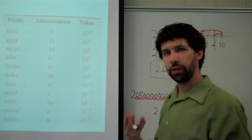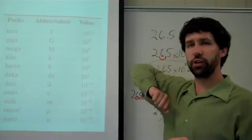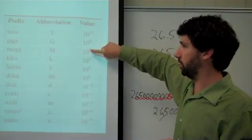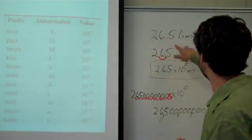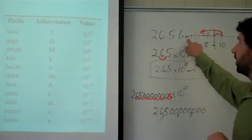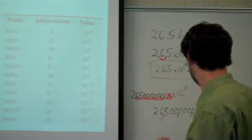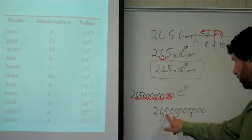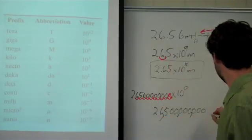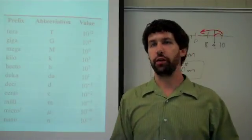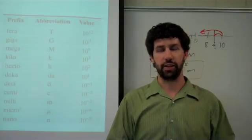Another way to confirm this: there's a nice pattern where these prefixes go up by thousands. Kilo is 1,000; mega is a million; giga is a billion. So having 26.5 gigameters is just saying 26.5 billion meters. There's our millions place, there's our billions place — 26.5 billion meters. And that's how you convert from a scientific prefix into both scientific notation and standard decimal notation.